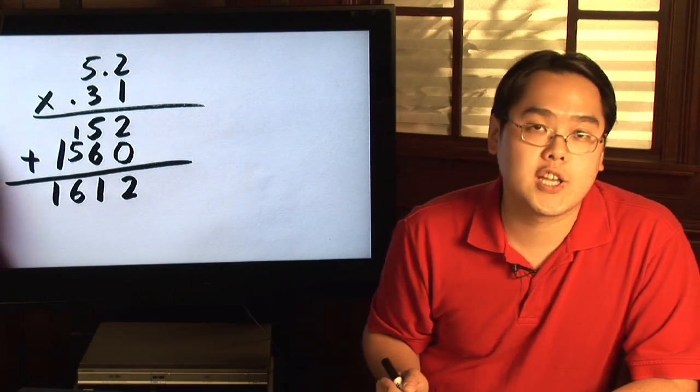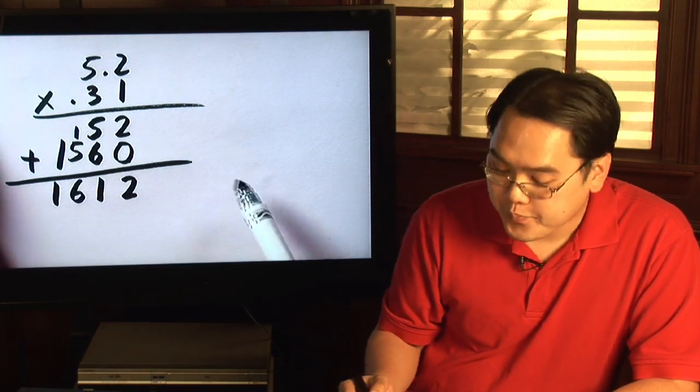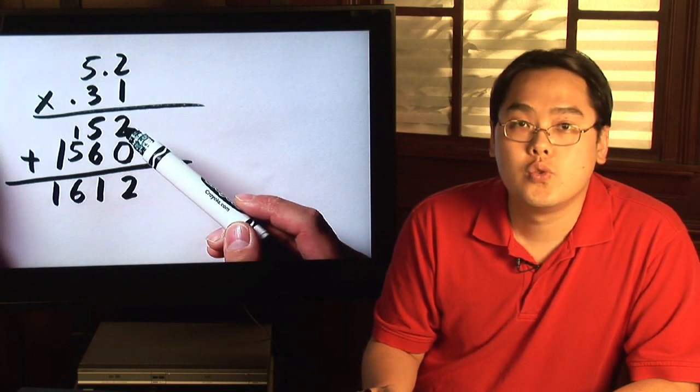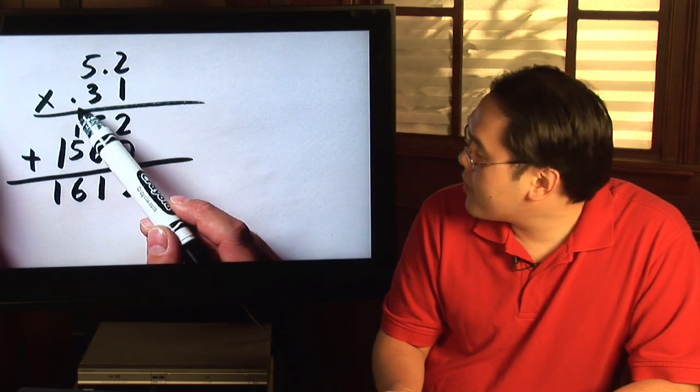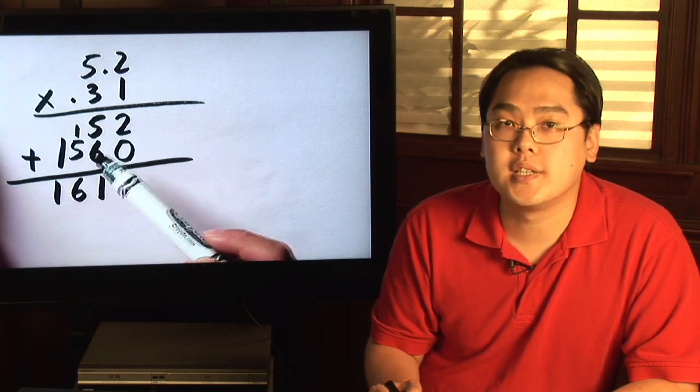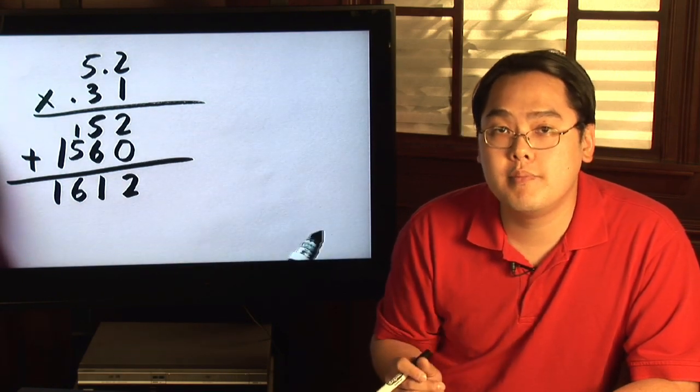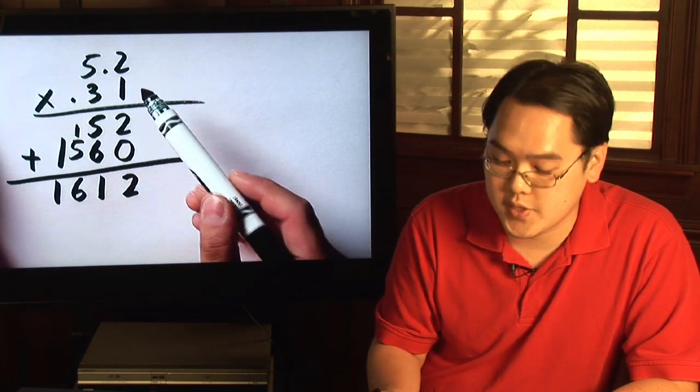Now here's where we take into account the decimal points. The top number has 1 decimal place, and the bottom number has 2 decimal places. To figure out exactly where your decimal lies, just count the total number of decimal places.